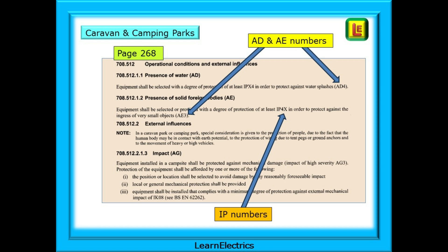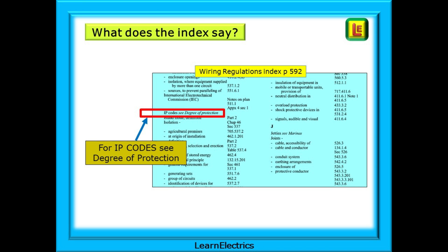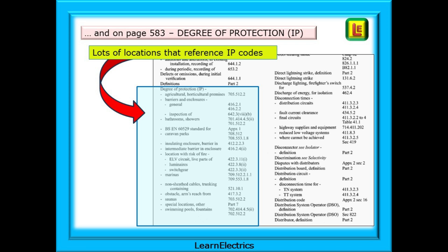We must be able to interchange these different standards, and understanding Appendix 5 is a good starting point. What does the index say about IP codes? Will the index help us to find the right numbers? Find page 592 in the regs book, where we have an entry that says IP codes — degree of protection. Let's go to page 583 then and search for degree of protection. Here we will find lots of locations that reference IP codes that have their own particular requirements. Learn to find this page quickly, especially in electrical exams.